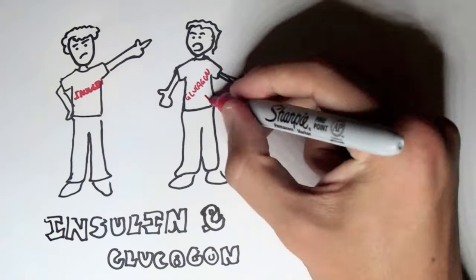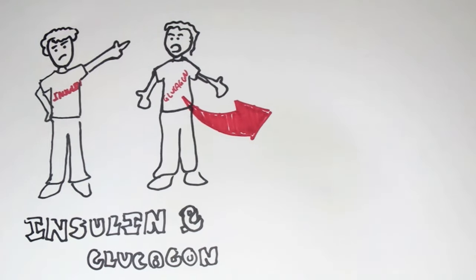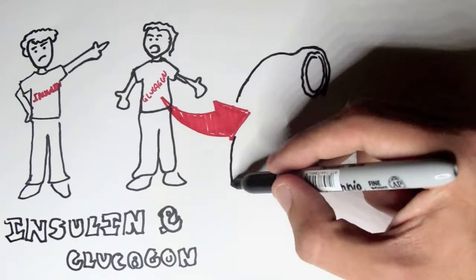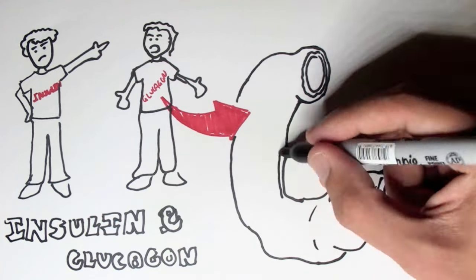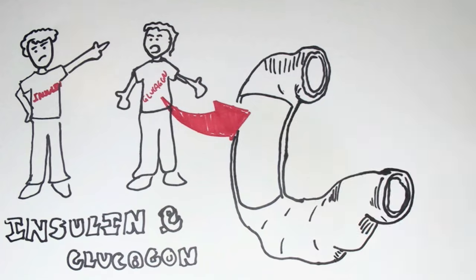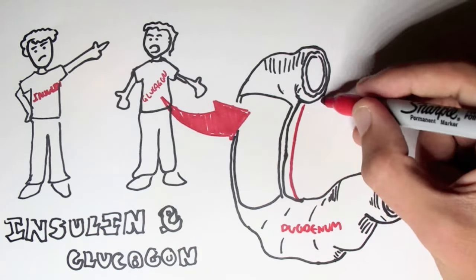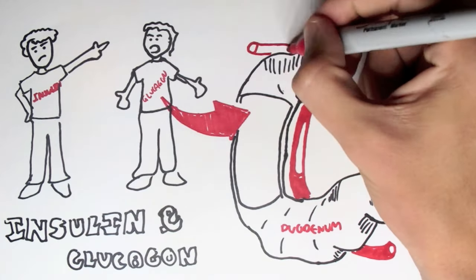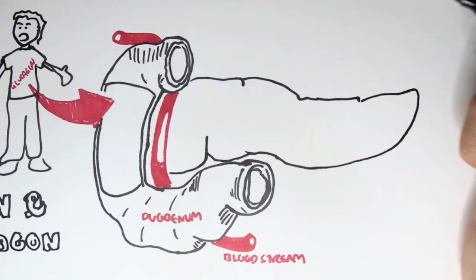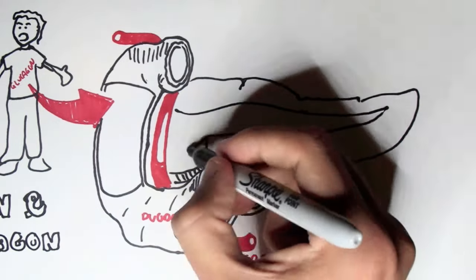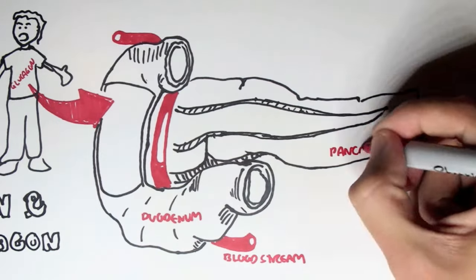Now where do insulin and glucagon come from? Well, if we zoom into this man's stomach, we can see here is a duodenum, which is part of the small intestines, the first part of the small intestines. And we also have blood, the bloodstream all around this area. Now right beside the duodenum, we have the pancreas, and the pancreas is also situated right below the stomach.